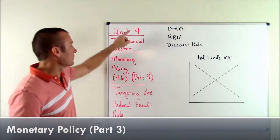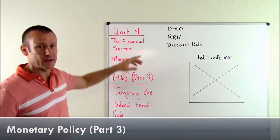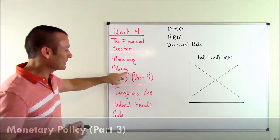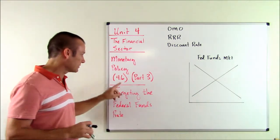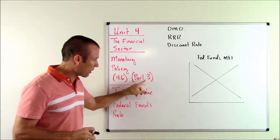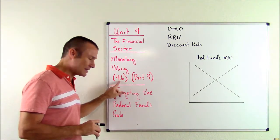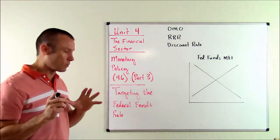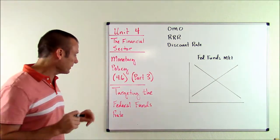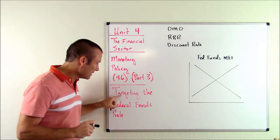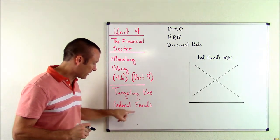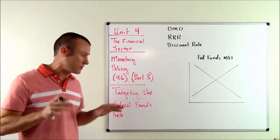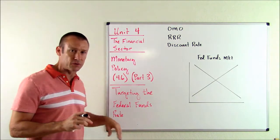Hey everybody, welcome back. We are in Unit 4, the financial sector. We're focused on monetary policy. This is subunit 4.6, part three. What are we doing in part three? We're talking about how the Fed targets the federal funds rate.